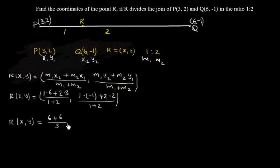By 3, comma 1 into -1 is -1, plus 2 into 2 is 4, by 3. Now simplify this. So R(x,y) is equal to 6 + 6 is 12.